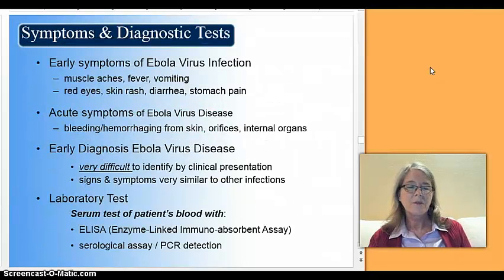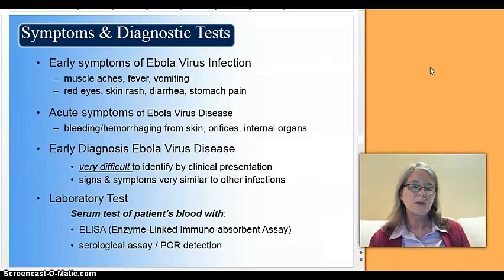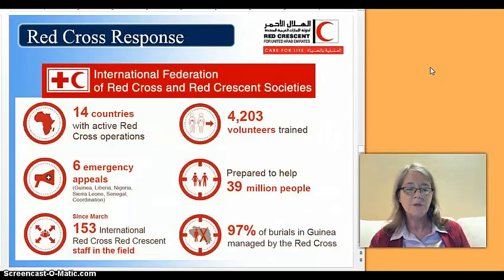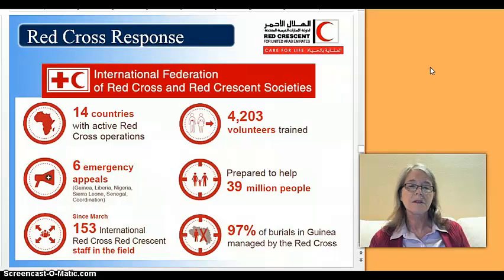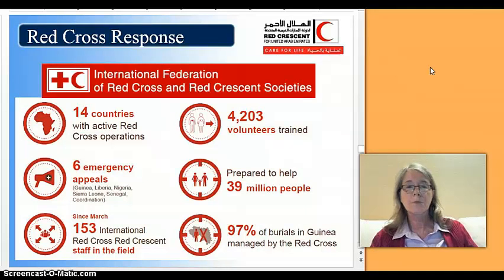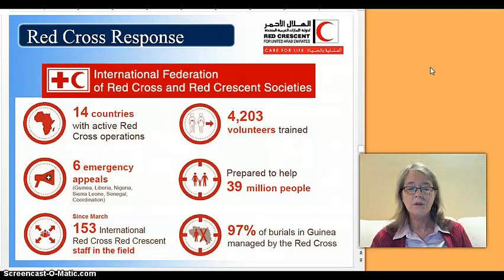Regarding routine immunizations and current vaccine recommendations: there is no vaccine for Ebola, but one is being developed and there are some candidates, which is really good. One thing to consider is volunteering with the International Federation of Red Cross when these types of emergencies arise. Fourteen countries across the world sent volunteers to help with routine tasks — you wouldn't necessarily have to be exposed to patients, you could do logistics and help transport materials.